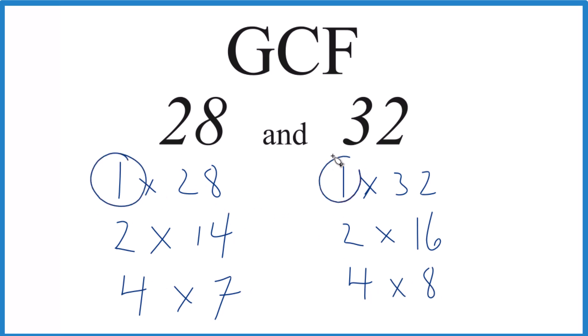1's a common factor between both. We have 2, that's a common factor, and 4, that's the common factor that probably is the greatest. I don't see anything greater than 4 that's on both lists. So in answer to our question, the greatest common factor for 28 and 32 is 4.